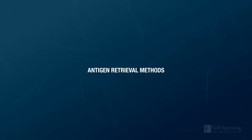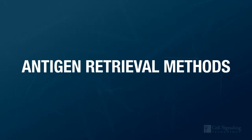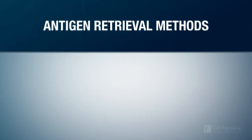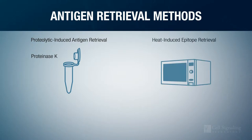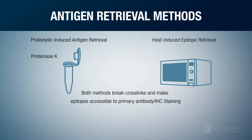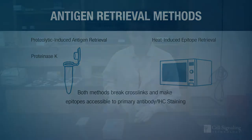Several methods exist for revealing epitopes that have been masked by cross-linking fixatives like formalin. These include proteolytic-induced antigen retrieval, which relies on an enzyme like proteinase K, or heat-induced epitope retrieval, which uses heat to break apart cross-linked bonds and unwind proteins. Either method can unmask epitopes, rendering them accessible to the primary antibody and amenable to staining by IHC.